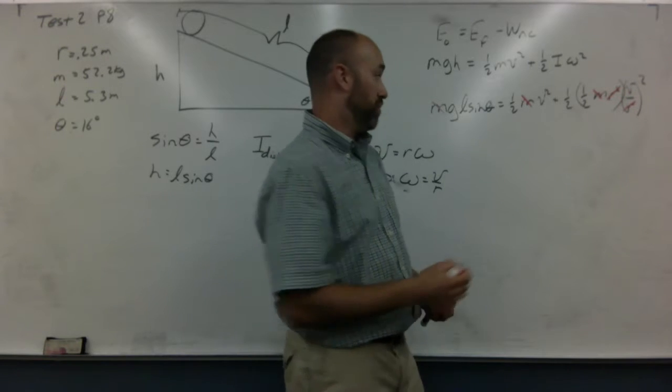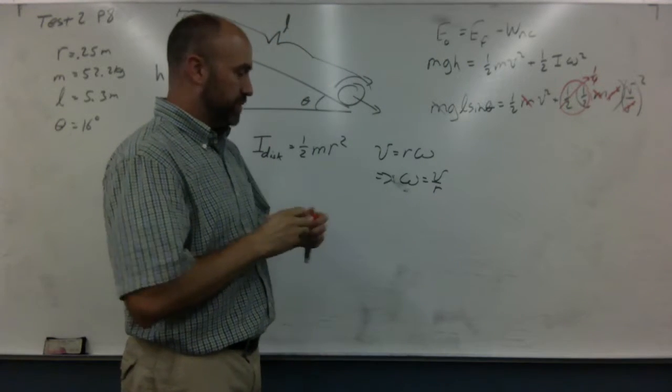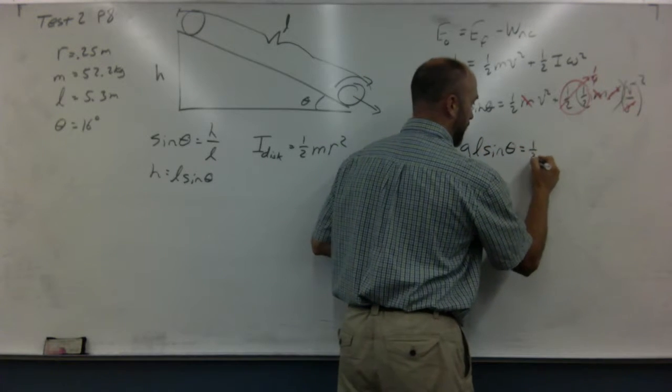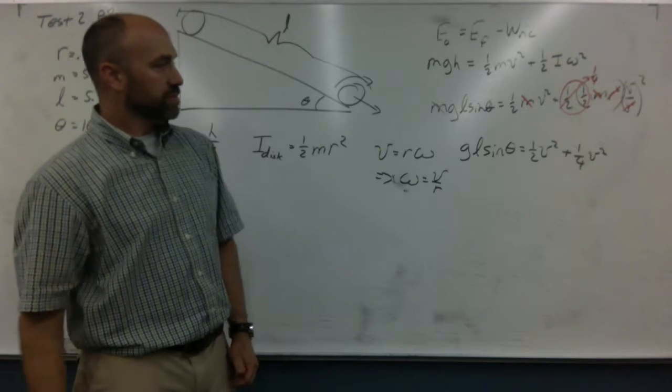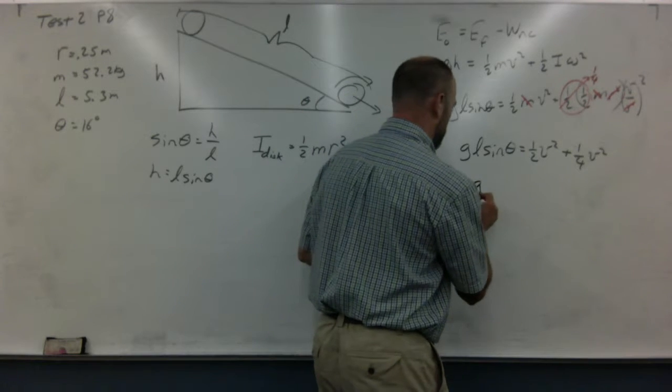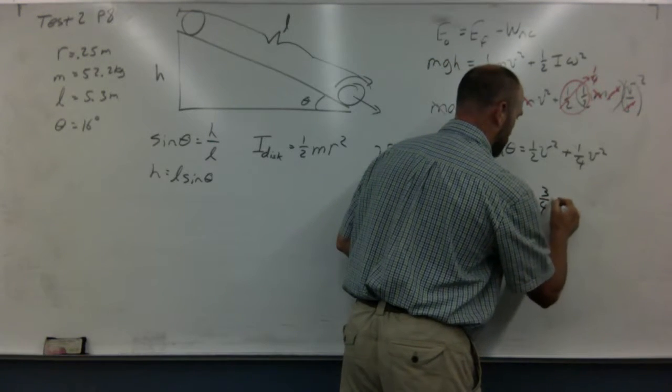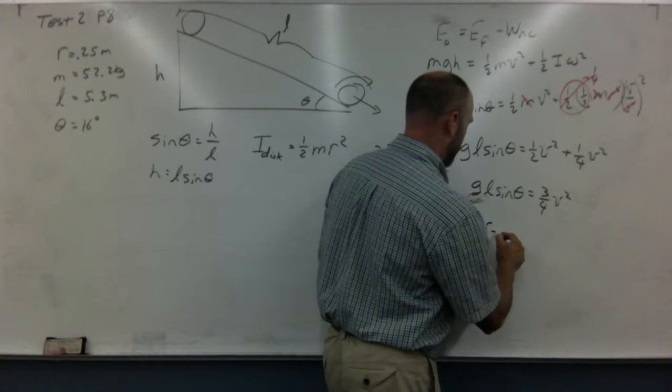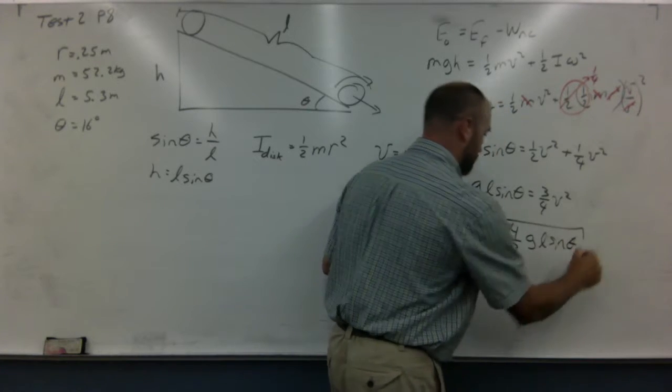Lastly, notice that a half times a half is a quarter. So let me rewrite this. Now we've got g l sine theta equals one half v squared plus one quarter v squared. Well, a half plus a quarter, isn't that just three quarters? So we have g l sine theta equals three quarters v squared. And solve it for v. V equals four thirds g l sine theta. Don't forget your square root.